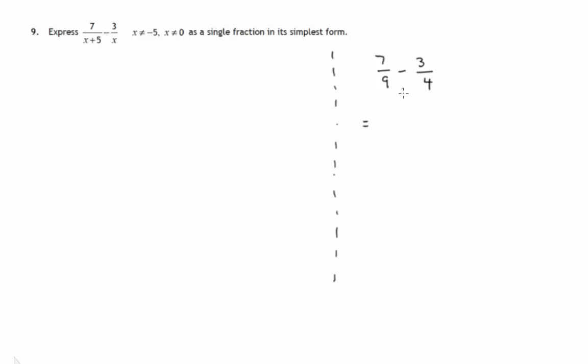What we normally do here is we cannot subtract quarters from ninths, we have to get the denominators the same. So we would change them both into 36ths by multiplying top and bottom in the first one by 4 and top and bottom in the second one by 9.